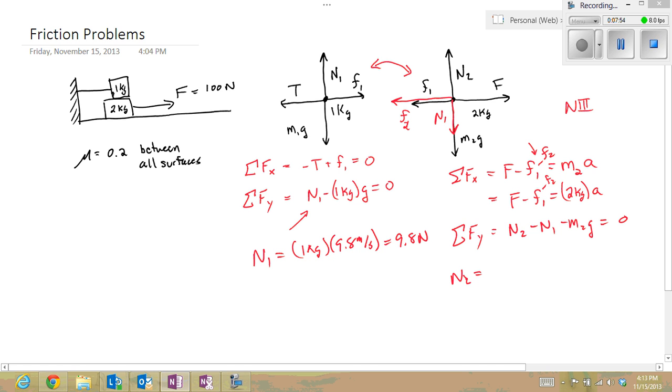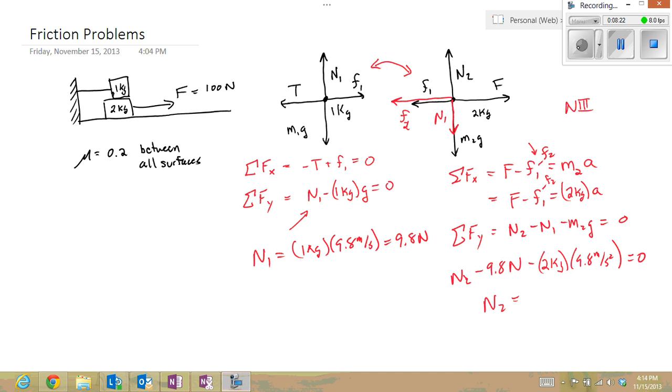N2 minus 9.8 newtons minus M2g, which would be 2 kilograms times 9.8 meters per second squared, has to equal zero. So I have N2 must equal minus 9.8 minus 19.6, which is 29.4 newtons. The minus sign goes away because I took that over to the other side of the equation. Or you can also think of N2 as pointing upward, so it should be positive. And I once again wrote the wrong units here, newtons.